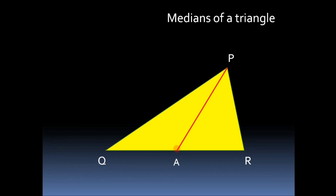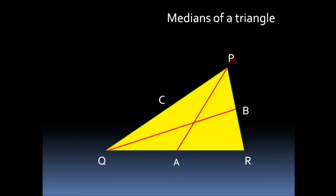So PA is the first median of triangle PQR. As there is another vertex Q, suppose point B is the midpoint of segment PR. If we join point Q and point B, QB is the second median of triangle PQR. Similarly, if C is the midpoint of side PQ and we join R and C, then RC is the third median of the triangle.